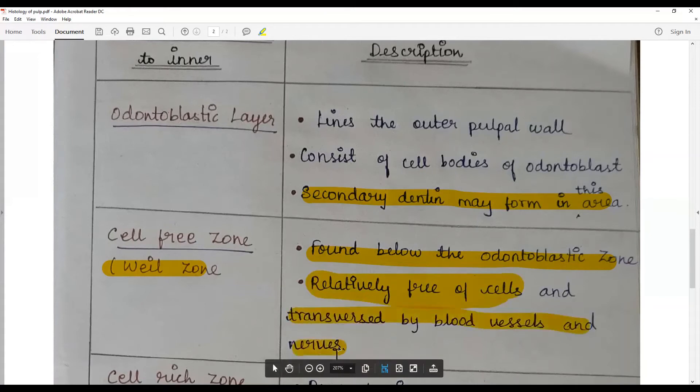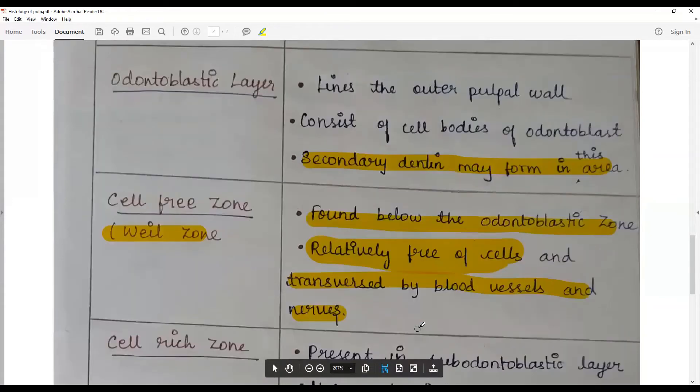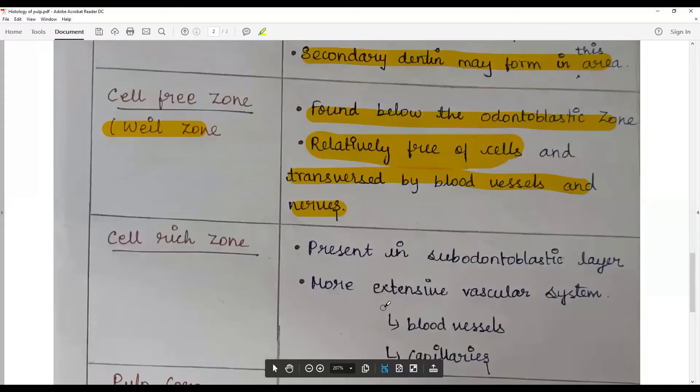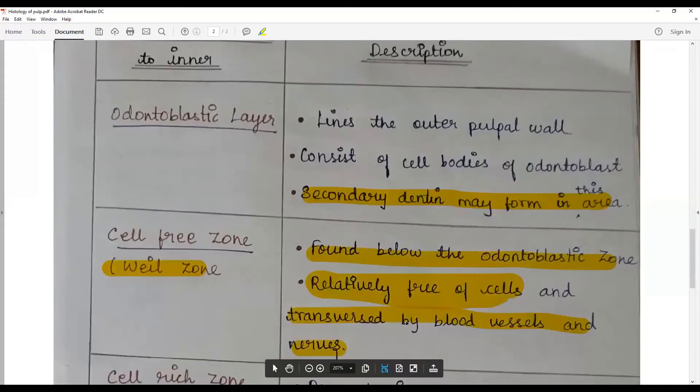Why this is cell-free zone is to facilitate the backward movement of odontoblastic layer when the secondary dentin formation or when the new dentin is laid down or new dentinal matrix is laid down. To facilitate that, a zone is kept free.